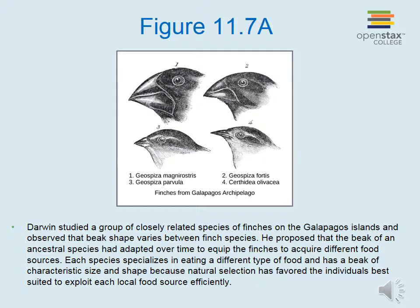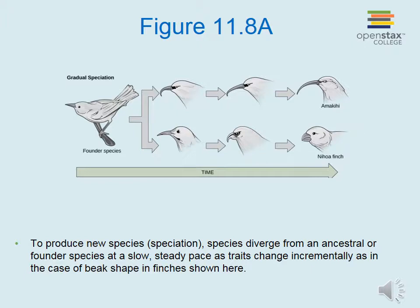Darwin studied a group of closely related finch species on the Galapagos Islands and observed that beak shape varies between species. He proposed that the beak of an ancestral species had adapted over time to equip the finches to acquire different food sources. Each species specializes in eating a different type of food and has a beak of characteristic size and shape because natural selection favored individuals best suited to exploit each local food source efficiently. To produce new species — known as speciation — species diverge from an ancestral or founder species at a slow steady pace as traits change incrementally, as in the case of beak shape in finches.